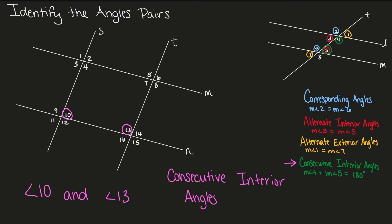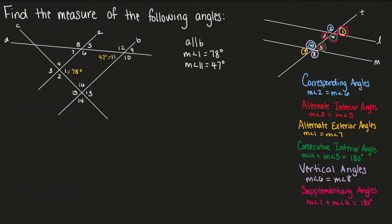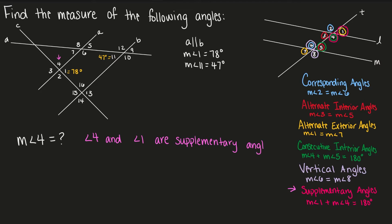Now, given two lines are parallel and we have two different transversals being cut, and given the angle measurements for two of our angles, let's find the measure of the following angles. Angle 1 and angle 4 are supplementary angles, which means angle 1 plus angle 4 equals 180 degrees, or angle 4 equals 180 degrees minus angle 1. Substituting 78 for angle 1, we get angle 4 is equal to 102 degrees.